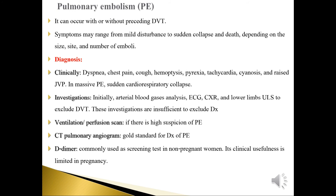Investigations for pulmonary embolism: initially, arterial blood gas analysis, ECG, chest X-ray, and lower extremity ultrasound to exclude DVT — though these are insufficient to exclude the diagnosis. A ventilation-perfusion scan should be performed if there is high suspicion. CT pulmonary angiogram is the gold standard for diagnosis. D-dimer, commonly used as a screening test in non-pregnant women, has limited clinical use in pregnancy because D-dimer is normally elevated during pregnancy.